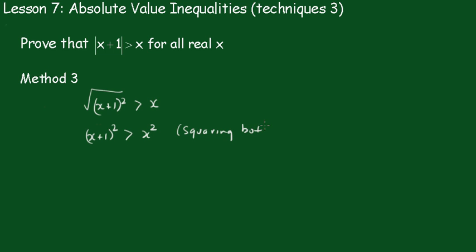And this is why you need to be very careful with this technique. Now then we'll remove the brackets. We get x squared plus 2x plus 1 is greater than x squared. x squareds go out. 2x plus 1 is greater than 0. 2x is greater than negative 1. And x is going to be greater than minus 1 half.